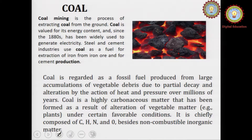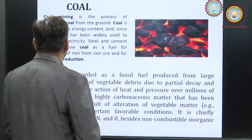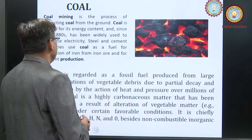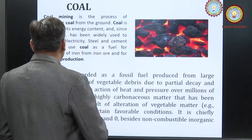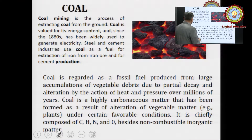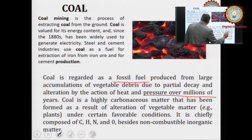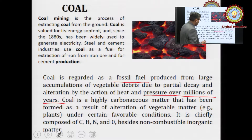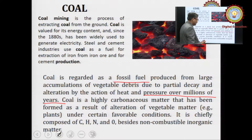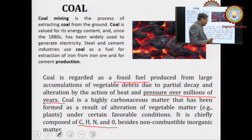Coal mining is the process of extracting coal from the ground. Coal is valued for its energy content and since the 1880s has been widely used to generate electricity. Steel and cement industries use coal as a fuel for extraction of iron from iron ore and for cement production. Coal is regarded as a fossil fuel produced from large accumulation of vegetable debris due to partial decay and alteration by the action of heat and pressure over millions of years. Coal is highly carbonaceous matter formed as the result of alteration of vegetable matter, such as plants, under certain favorable conditions. It is chiefly composed of carbon, hydrogen, nitrogen and oxygen, besides non-combustible inorganic matter.